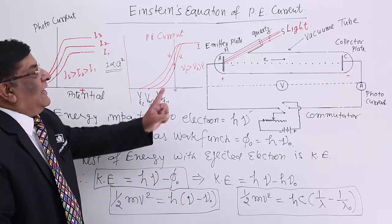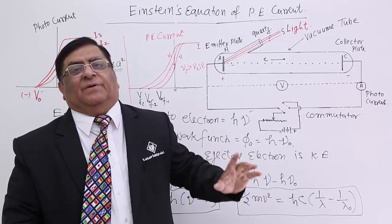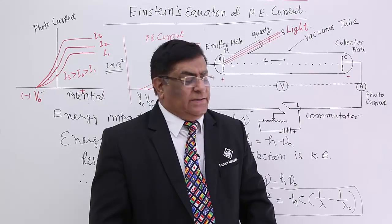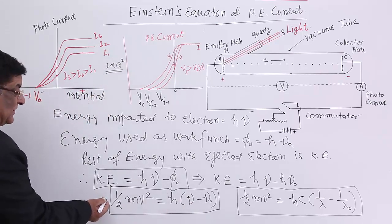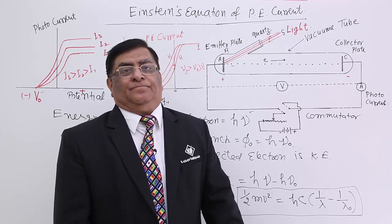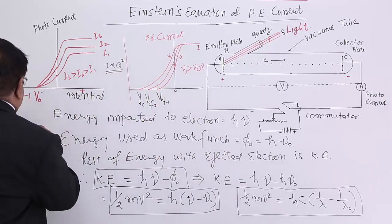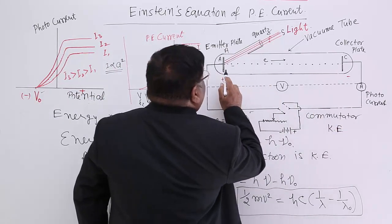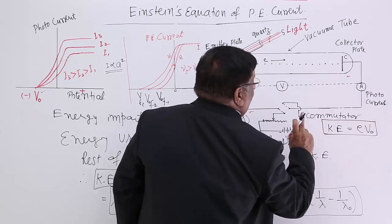This kinetic energy of the electron is the maximum kinetic energy. The kinetic energy may be less than this but not more than this. In Einstein's equation, kinetic energy is equal to this expression. But we have already established another formula related to stopping potential: kinetic energy of the ejected electron is equal to E into V0. This is what we have already established.